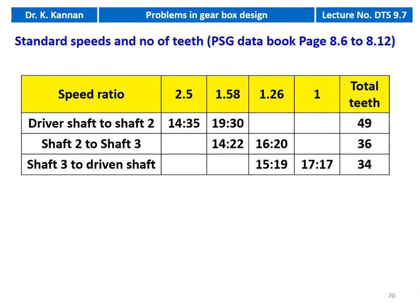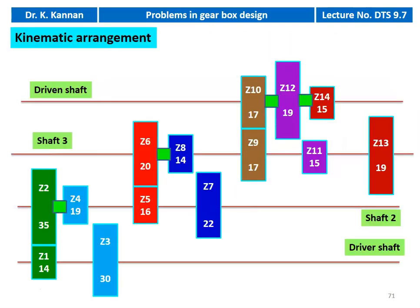We take the standard speed ratio and number of teeth from pages 8.6 to 8.12 of the PSG data book. The first stage has ratios 2.5 and 1.58; second stage has 1.26 and 1.0, then 1.58 and 1.26; third stage has 1.26 and 1.0. We then take the number of teeth: first stage is driver shaft to shaft 2, second stage is shaft 2 to shaft 3, third stage is shaft 3 to driven shaft. All number of teeth information is taken from the PSG design data book.